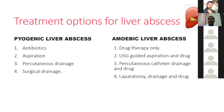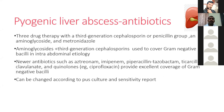Treatment options for liver abscess follow a four-stage protocol for both pyogenic and amoebic types: drug therapy (antibiotics for pyogenic, metronidazole for amoebic), aspiration, pigtail catheter drainage, and surgical treatment. For pyogenic liver abscess, antibiotics are the cornerstone — a triple drug therapy is used: third-generation cephalosporin or penicillin with aminoglycoside and metronidazole, adjusted according to culture and sensitivity.